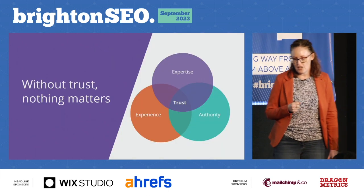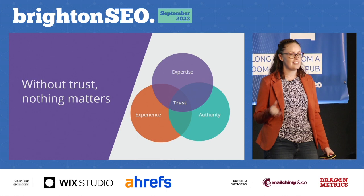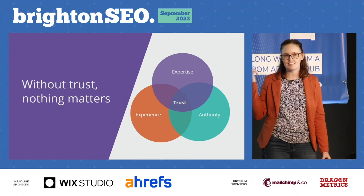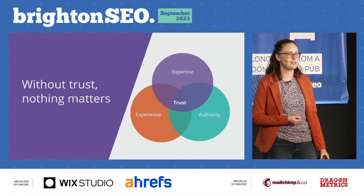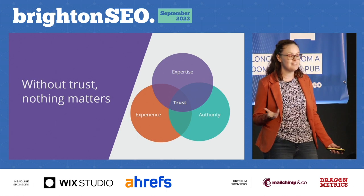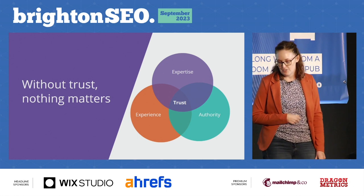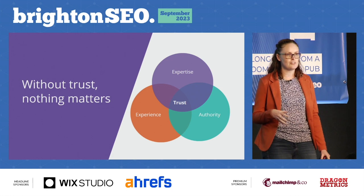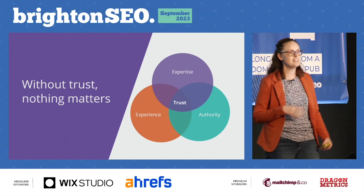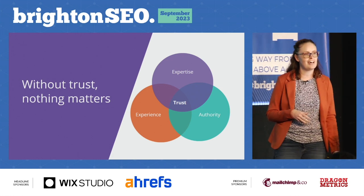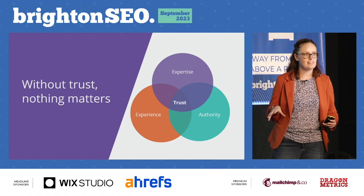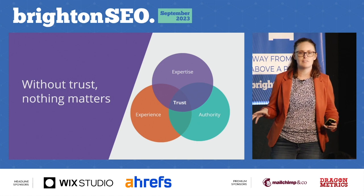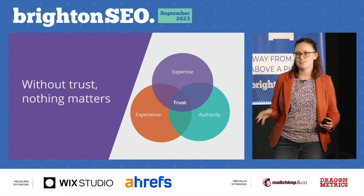We know that without trust, nothing else matters. This is the diagram you've probably seen from Google's EAT reference, and trust is central to that because without it, nothing else matters at all.